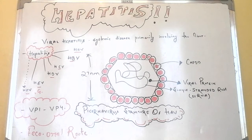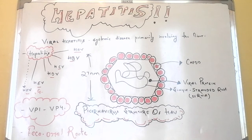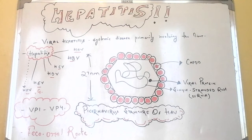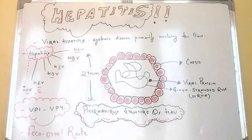To revise the structure: HAV is 27 nanometers, a picornavirus. Mode of infection is feco-oral route, affecting mostly children. Incubation period is approximately 15 to 45 days. Onset is acute and mild. It does not have any carrier state and does not have any potential for oncogenicity.